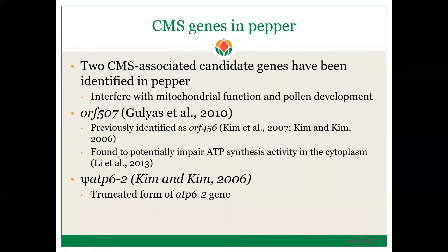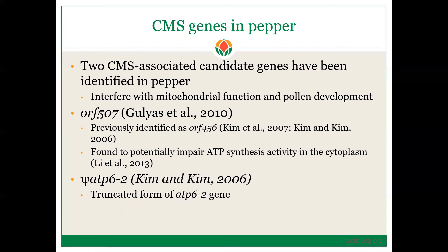There are two primary CMS-associated genes identified in pepper that interfere with mitochondrial function and pollen development — primarily both involved in ATP synthesis. In order for CMS to be useful, we also need genes that restore fertility so that the pepper will produce fruit or chili. RF genes are encoded in the nucleus and act to mask the effects of CMS.